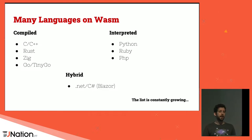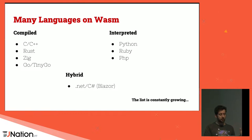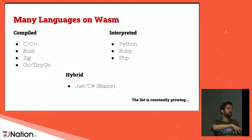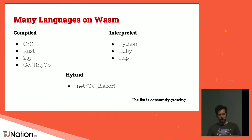There are already quite a few languages supporting WASM — this is not a complete picture. There are compiled languages such as C, C++, Rust, Zig, Go, and TinyGo. There are interpreted languages that bring their own interpreter compiled to WebAssembly. And there are hybrid techniques like .NET/C# that bring the interpreter with some optimization. The list is growing.